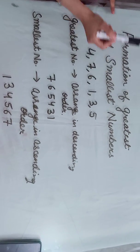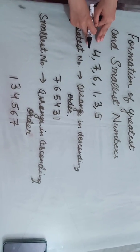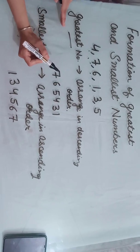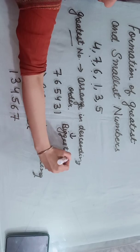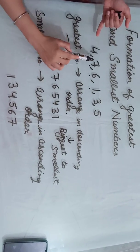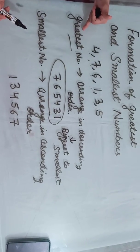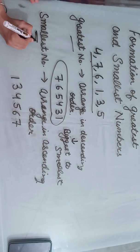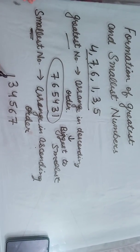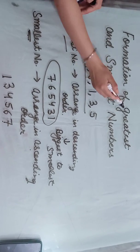Now we discuss forming the greatest and smallest numbers from given digits. Suppose you are given six digits. To form the greatest number, arrange the digits in descending order — from biggest to smallest. For example: 7, 6, 5, 4, 3, 1 gives the greatest six-digit number. To form the smallest number, arrange the digits in ascending order — from smallest to biggest — giving 1, 3, 4, 5, 6, 7.